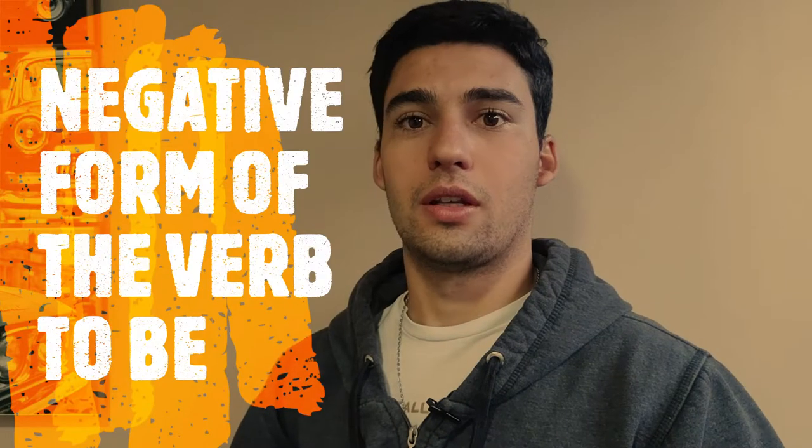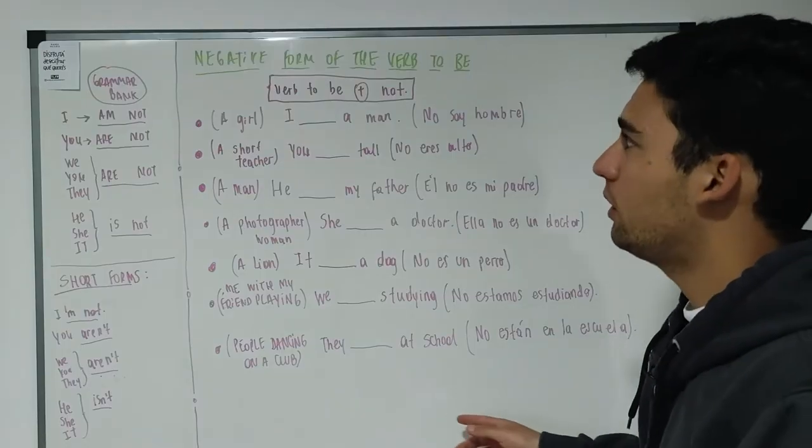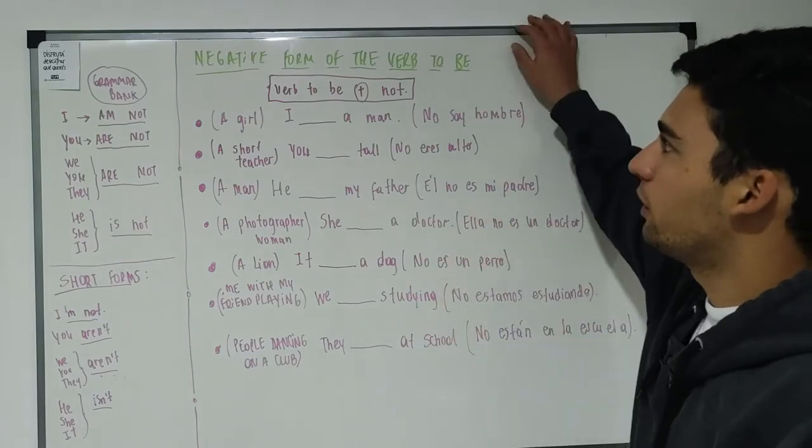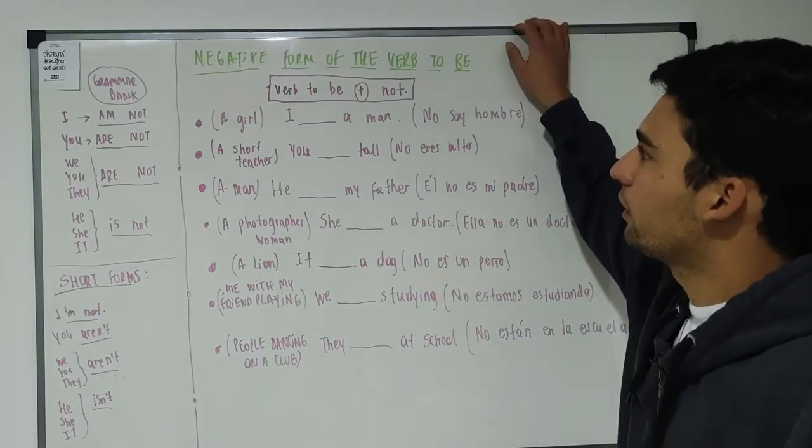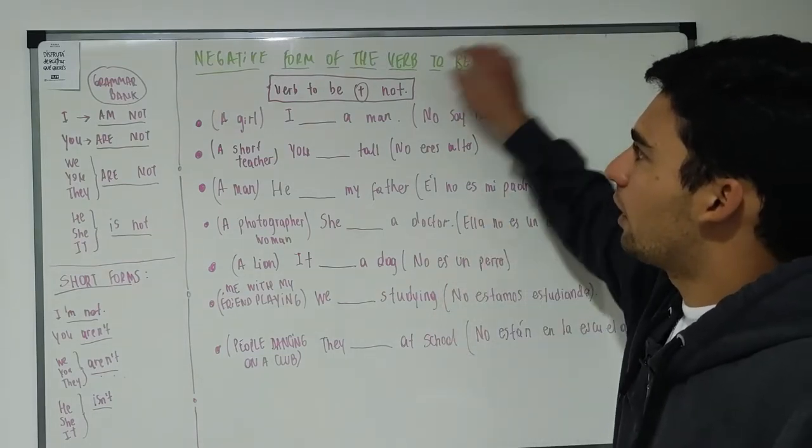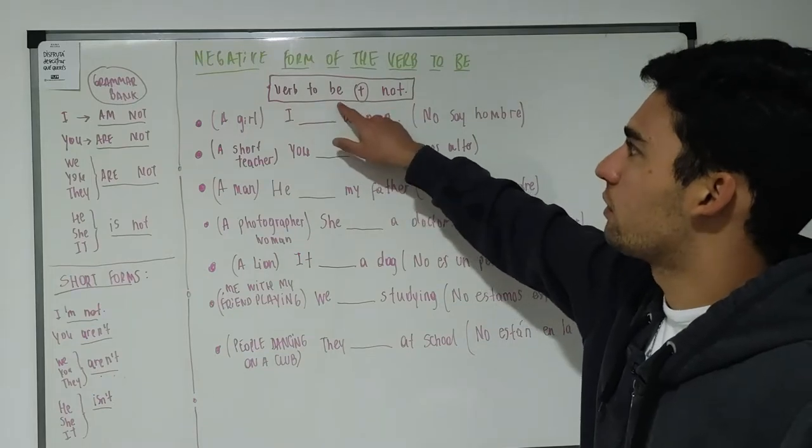Welcome everyone to a new video. Today we will continue with the verb to be. In this case we will talk about the last form which is the negative form. The negative form of the verb is made by adding to the verb to be the word not.